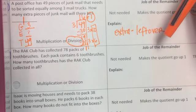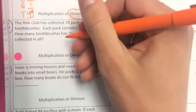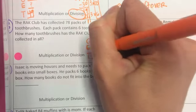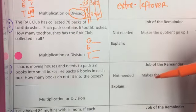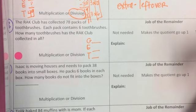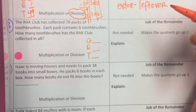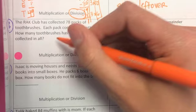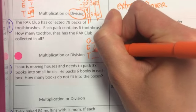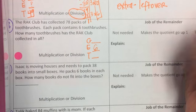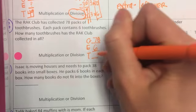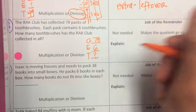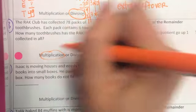So the next question on here is actually a question where we would want to do GET again. Because we're talking about groups in each and total. So the RAK Club has collected 78 packs of toothbrushes. This is not true, but it's true for our problem. Each pack contains 6 toothbrushes. How many toothbrushes has the RAK Club collected in all? So I know that each pack is 6. So my each is 6 toothbrushes in each pack. So pack is my group. How many packs do I have? I have 78 packs. I do not know my total this time. And so a total would be a larger number, which in this case means I'm going to multiply.